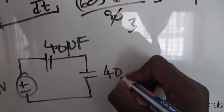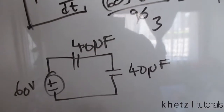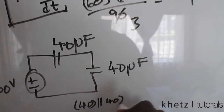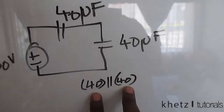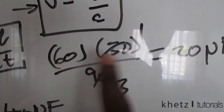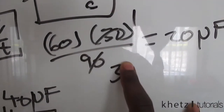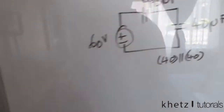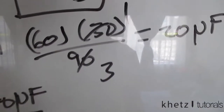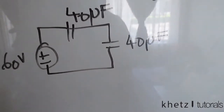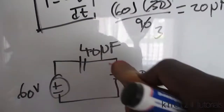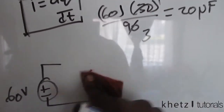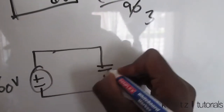Now we have 40 microfarads on this side and the original 40 microfarads from the question. Combining these two using the series formula — multiplying the values and dividing by their sum — since they're equal, we already know that gives us 20 microfarads. So the equivalent capacitance of the whole circuit is 20 microfarads.